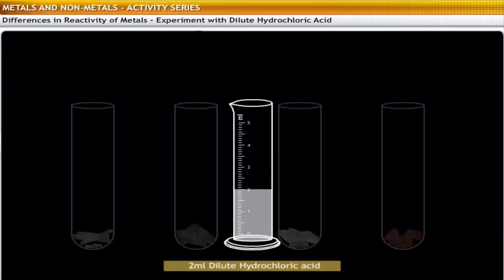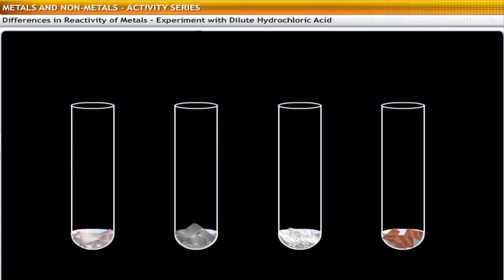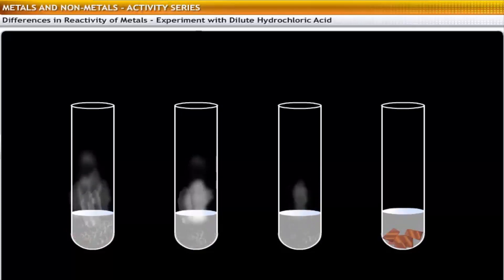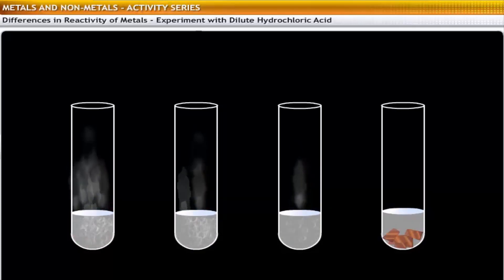Add 2 ml of dilute hydrochloric acid or sulfuric acid to each of these samples. The reaction of the acid with the metal will yield a salt and hydrogen gas in each test tube.